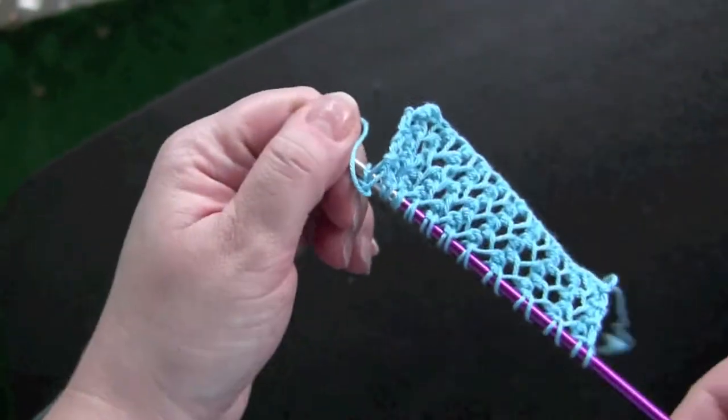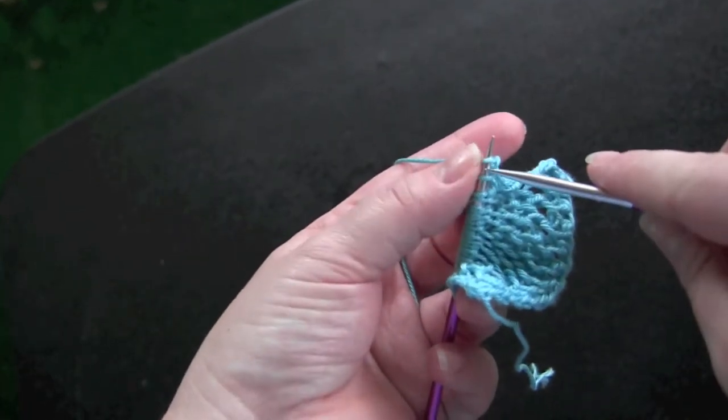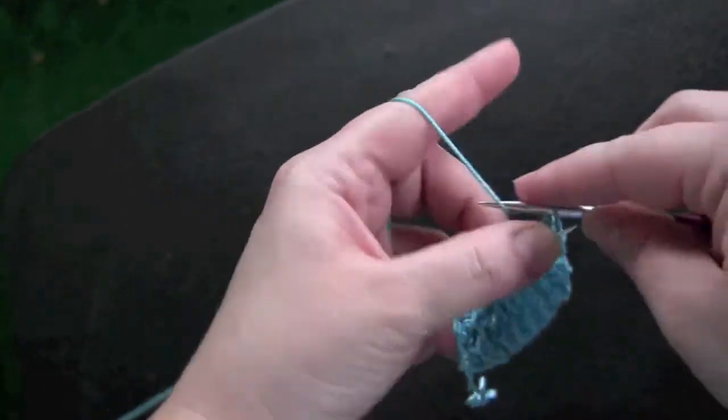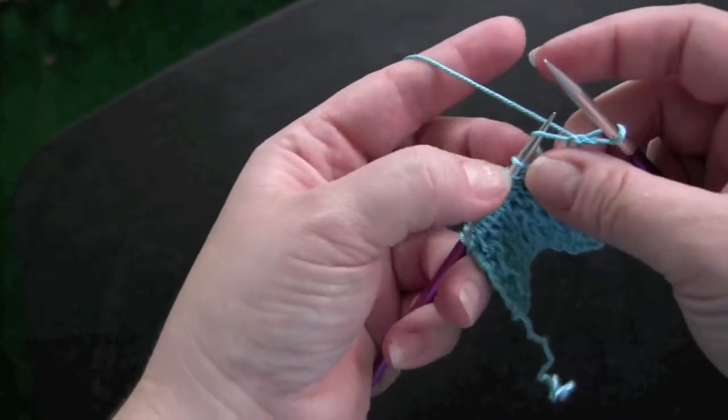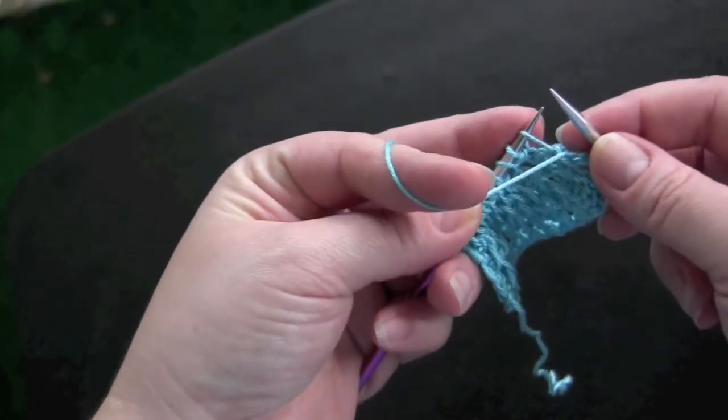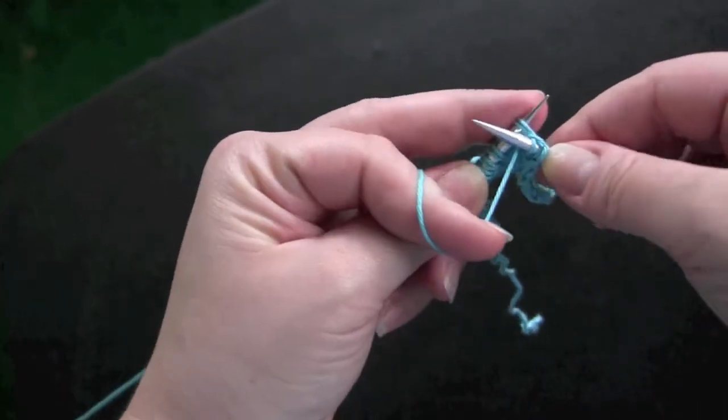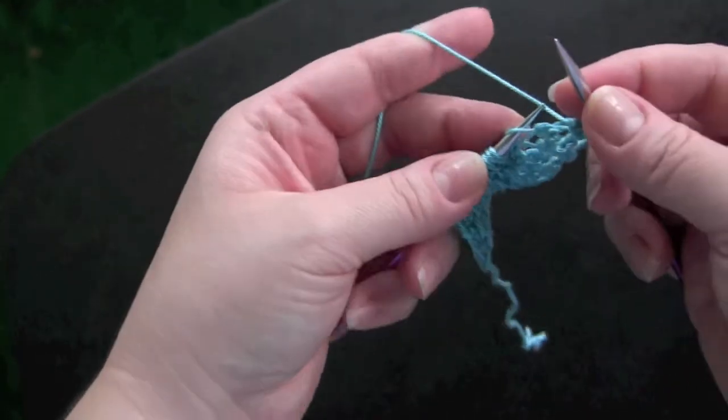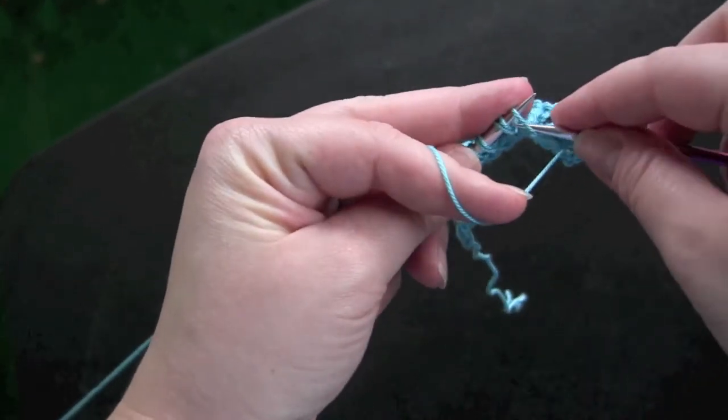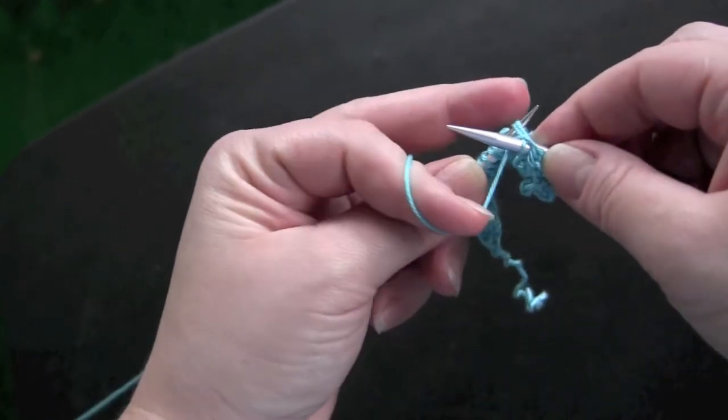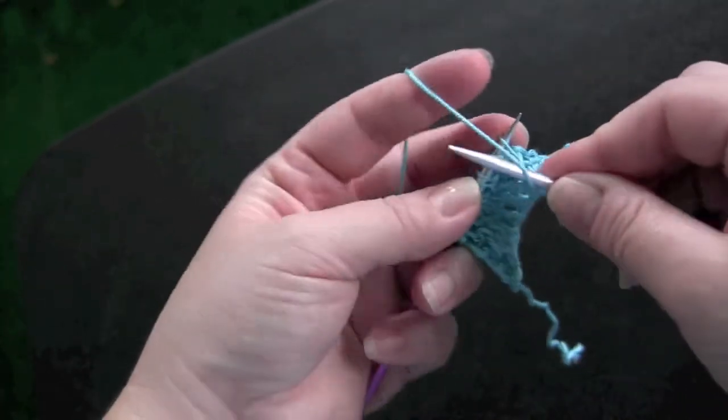And then row two. Knit your first stitch before beginning the pattern repeat. The pattern repeat for row two is purl two together, yarn over. Purl two together and yarn over.